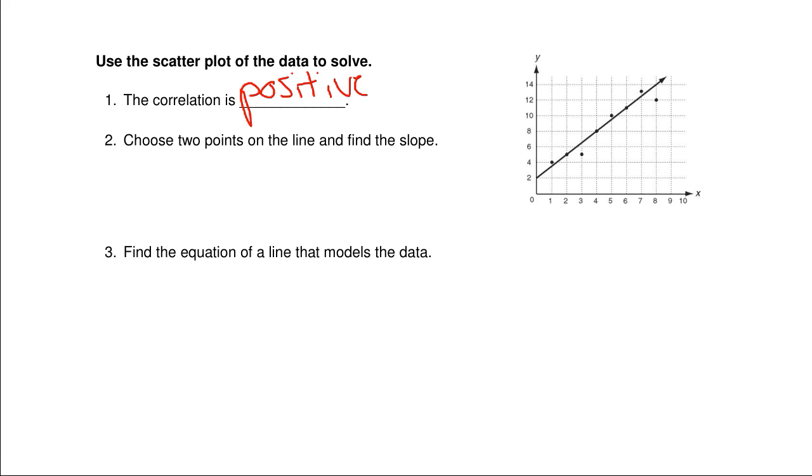We need to pick two points. So we could use (1, 4) and we could use (2, 5). So the slope is the difference in y's over the difference in x's. So that would be one.